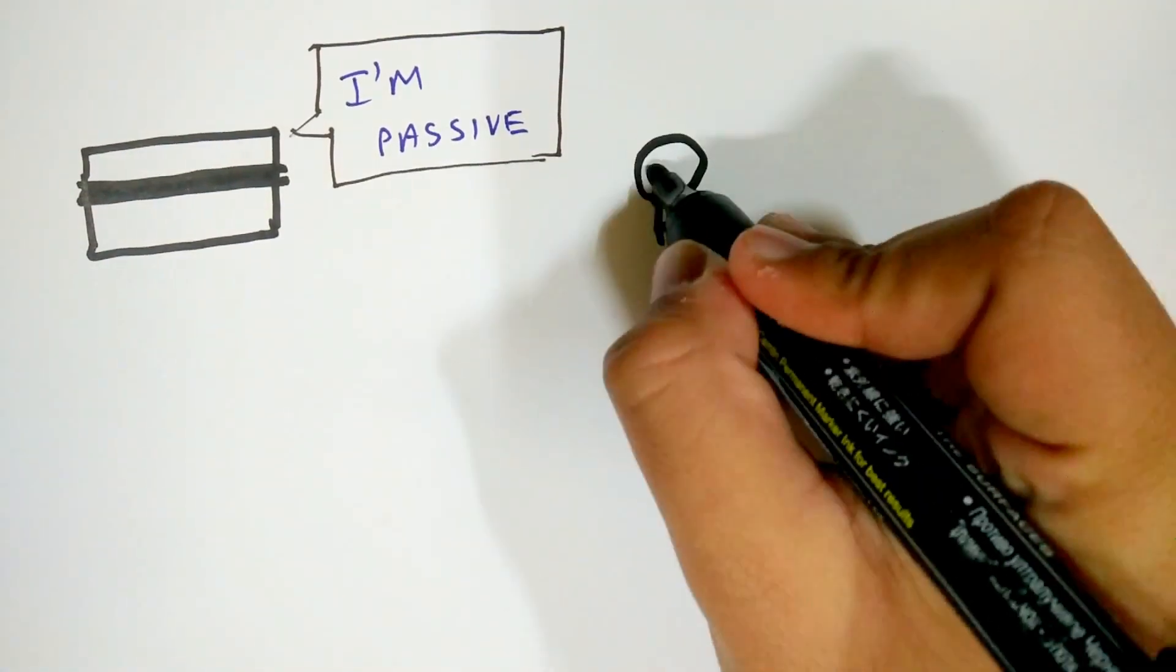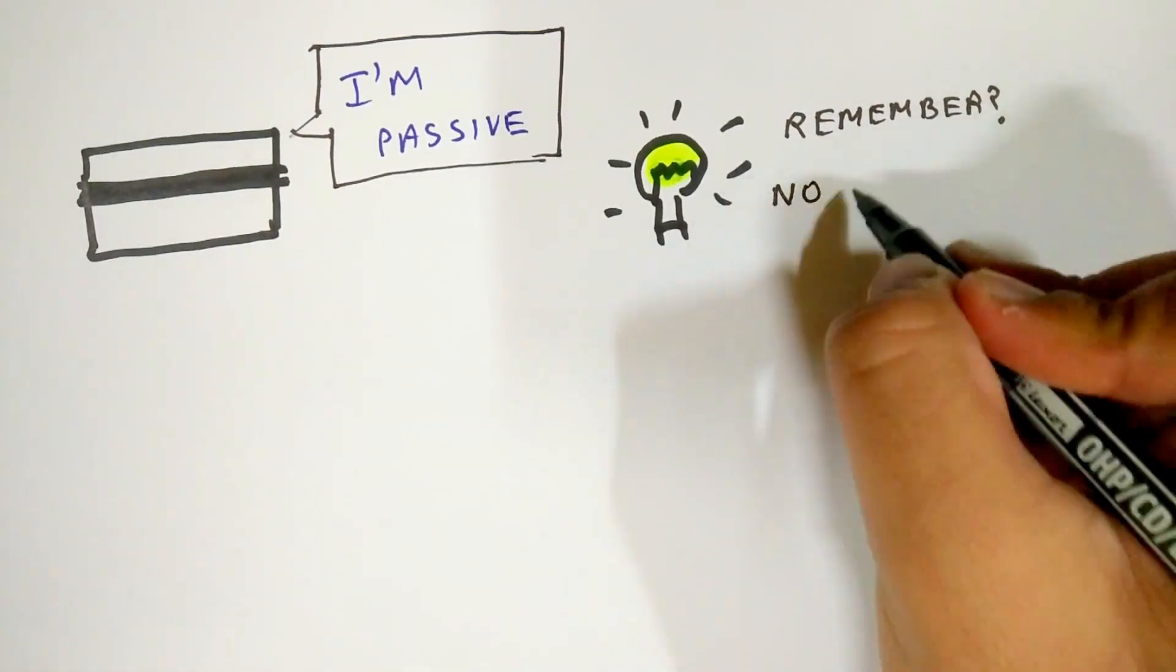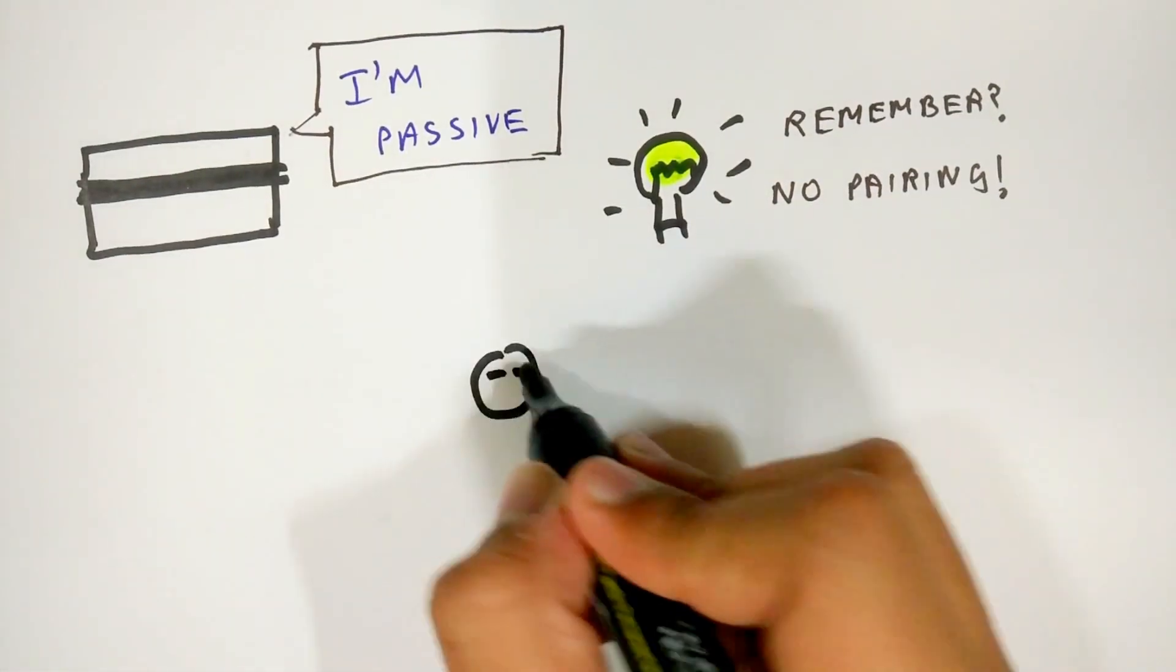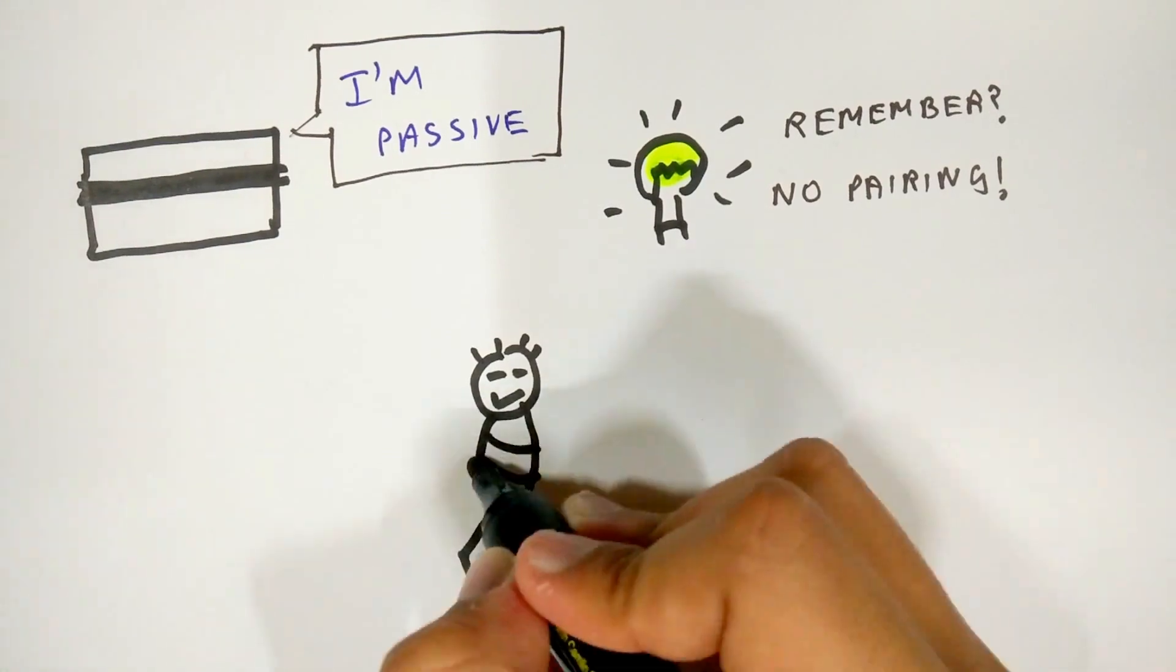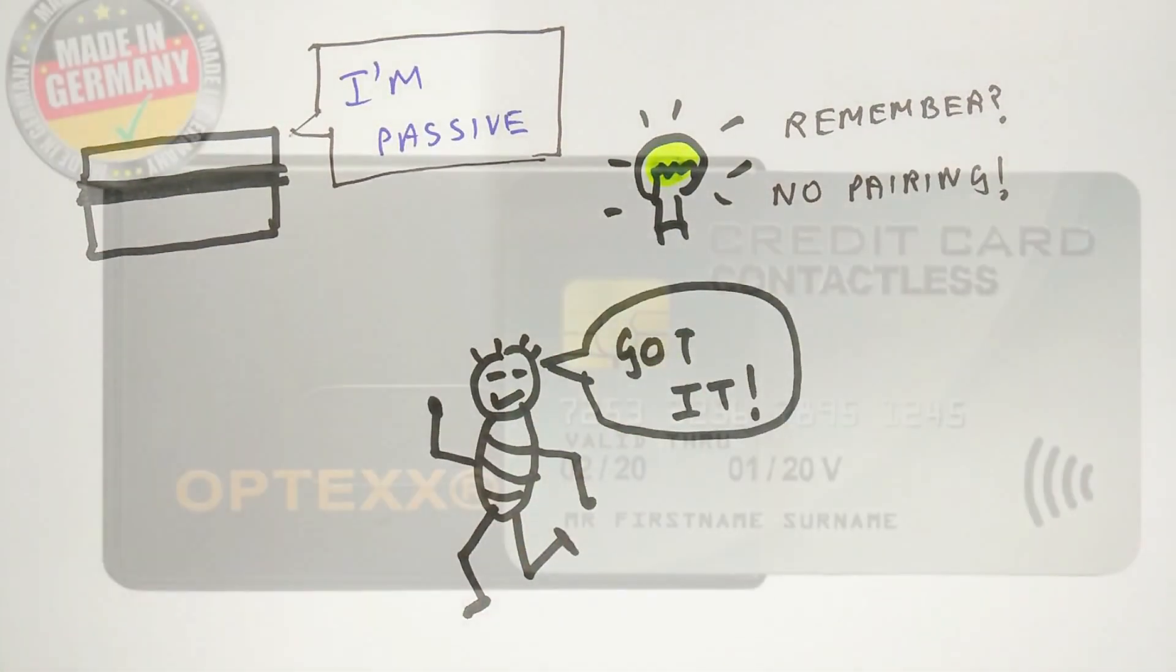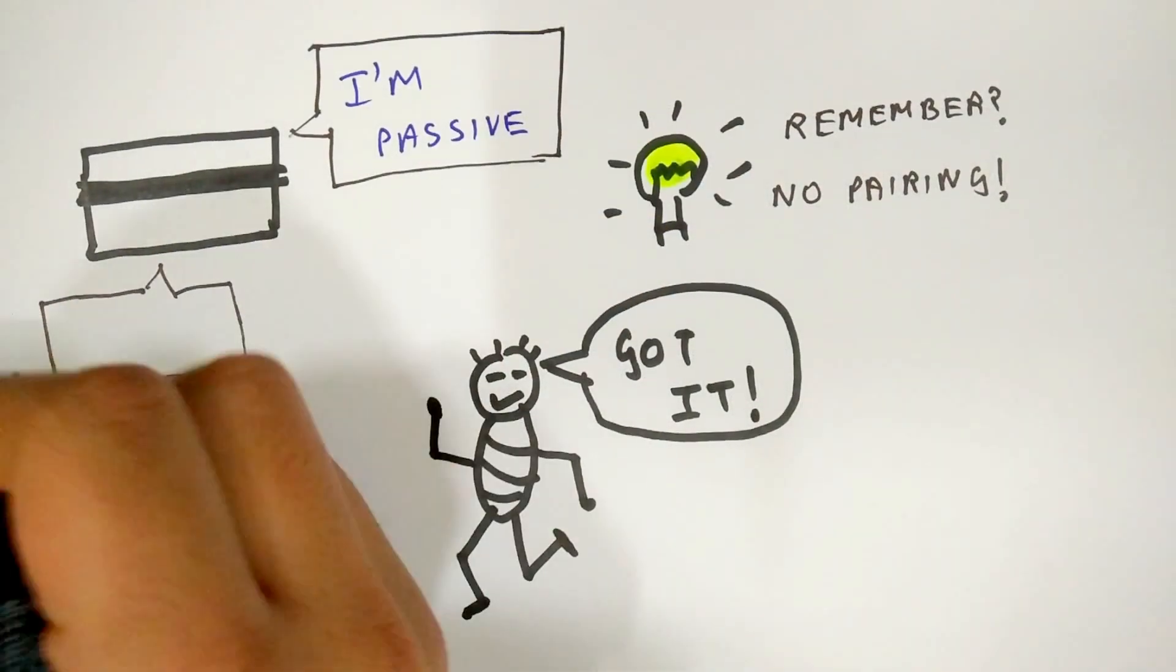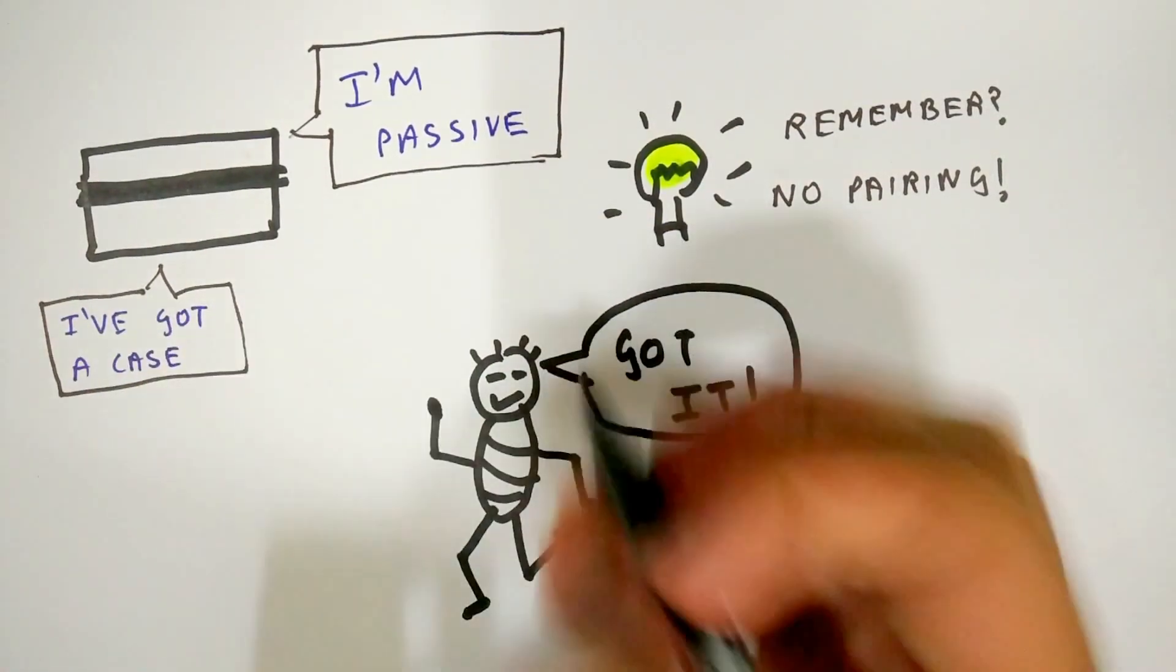However, credit cards are passive devices which means they transmit information without needing to verify the authenticity of the active device, which means that anyone can bring an active device near your wallet and read vital credit card information. Special cases are available that can block the active device from reading information.